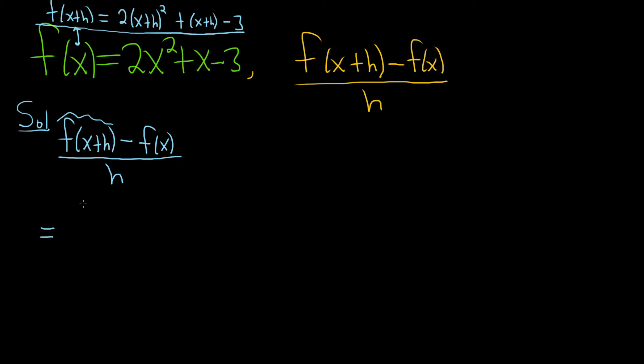So I'm going to write it down here in the problem. So 2 times x plus h squared plus, and then x plus h minus 3. So we've only written down this piece here, which is f of x plus h. Then we have the minus, and then f of x.